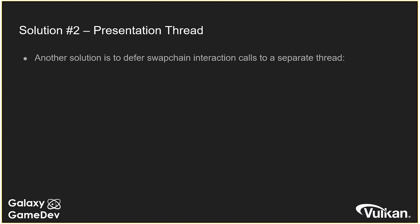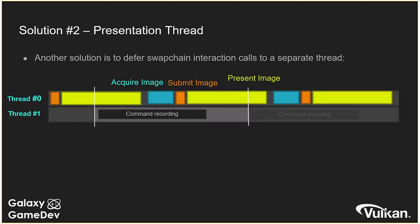A more Vulkan-specific solution is using a separate thread. The idea is to defer all swap chain interactions — acquire, submit, present — to a secondary thread, completely decoupled from command buffer recording, Vulkan object preparation, and resource staging. The real benefit is there's no reduction in throughput of your heavy graphics workload from unexpected frame changes. This is especially relevant for games with highly variable frame rates, like many Unreal Engine titles that flip between CPU-bound and GPU-bound frame by frame depending on shader compilation or resource preparation.